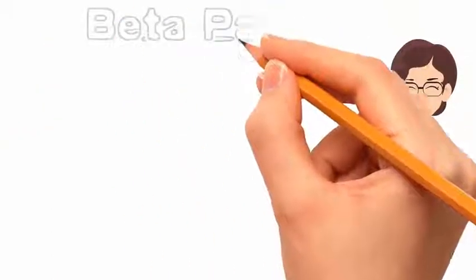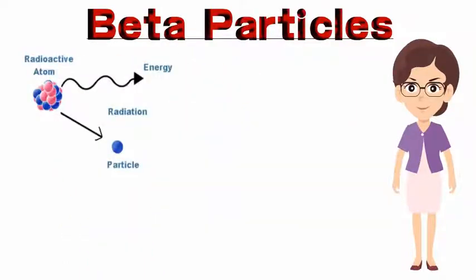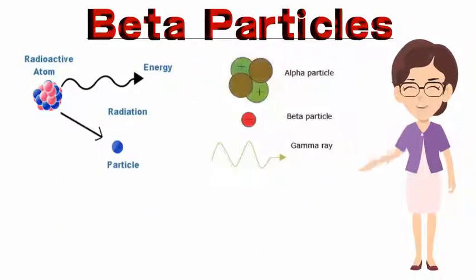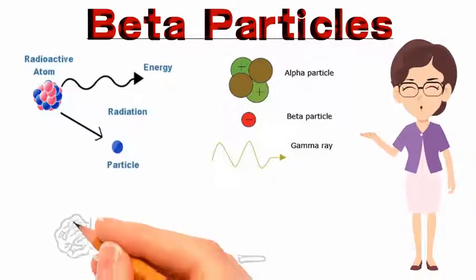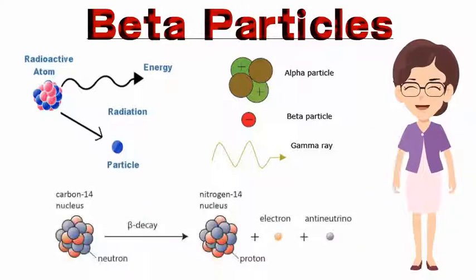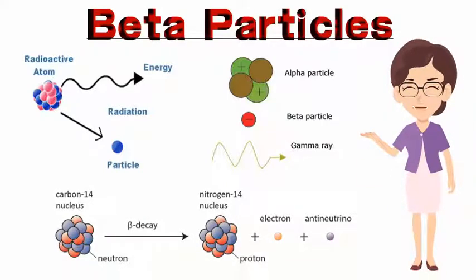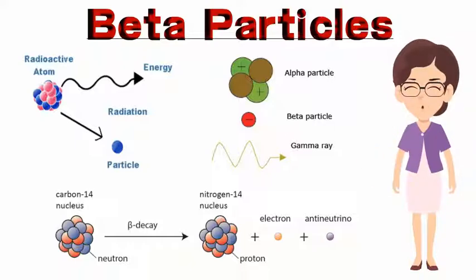Beta particles are high-energy, high-speed electrons or positrons emitted by some types of radioactive decay when an unstable atomic nucleus with an excess of neutrons or protons undergoes beta decay, a process mediated by the weak nuclear force. The particles emitted are a form of ionizing radiation, also known as beta rays.